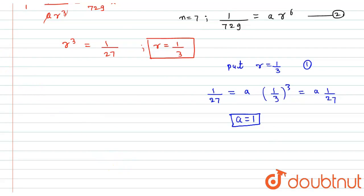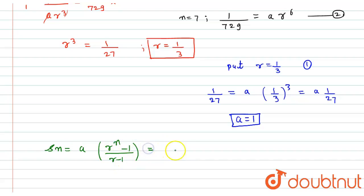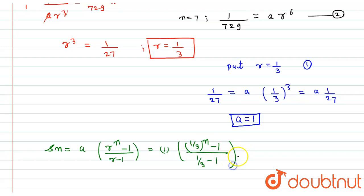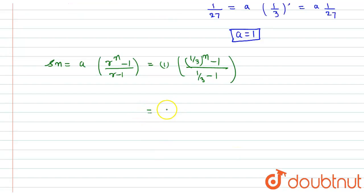Now I have a = 1 and r = 1/3. So I can find the sum of n terms: Sn = a·(r^n - 1) / (r - 1). Substituting: Sn = 1·((1/3)^n - 1) / (1/3 - 1), which gives (1/3^n - 1) / (1/3 - 1).